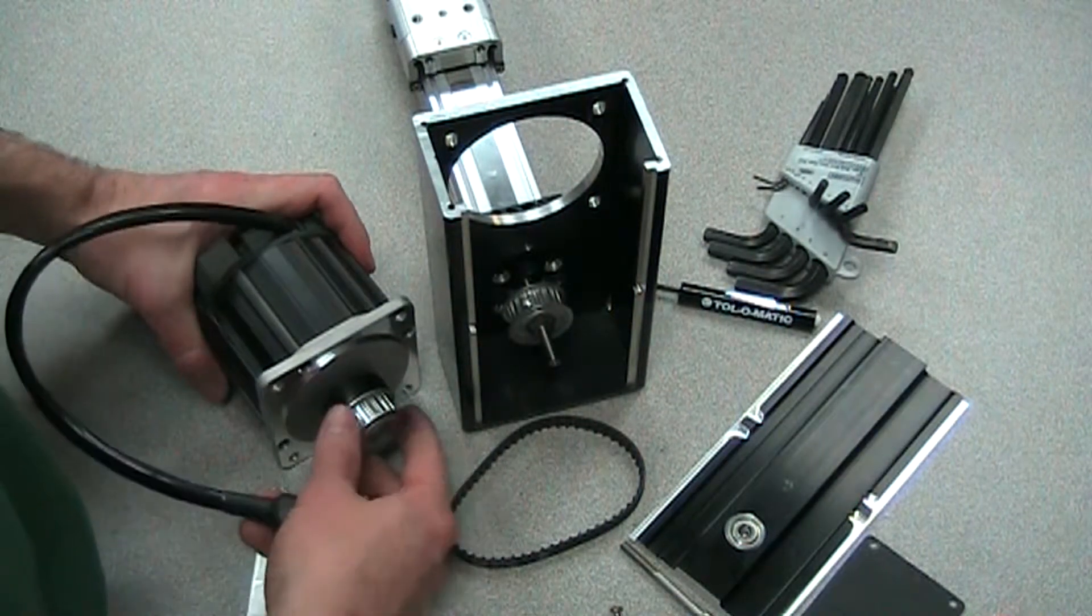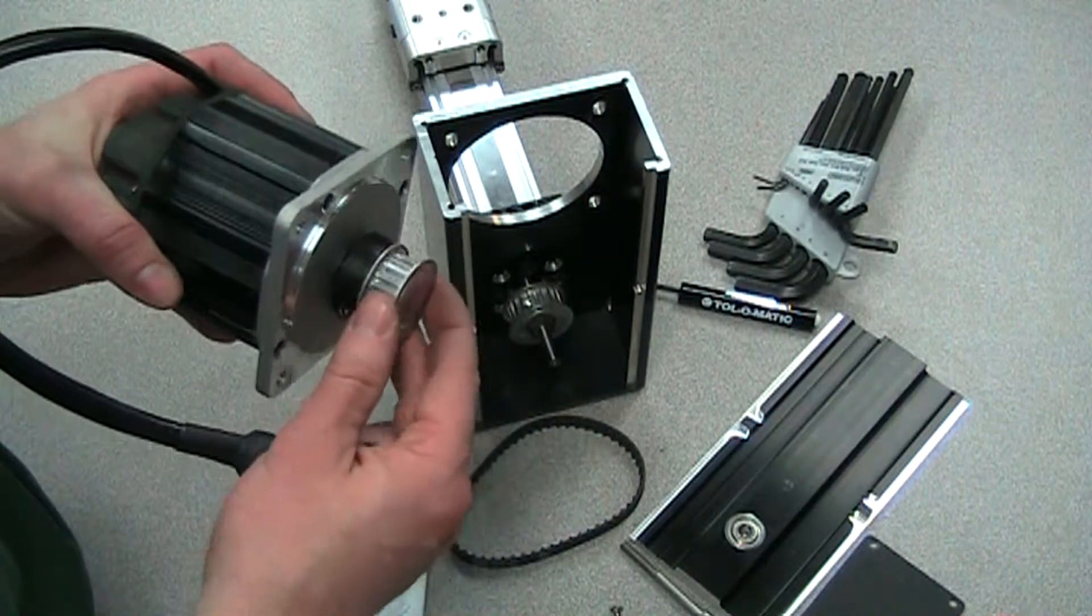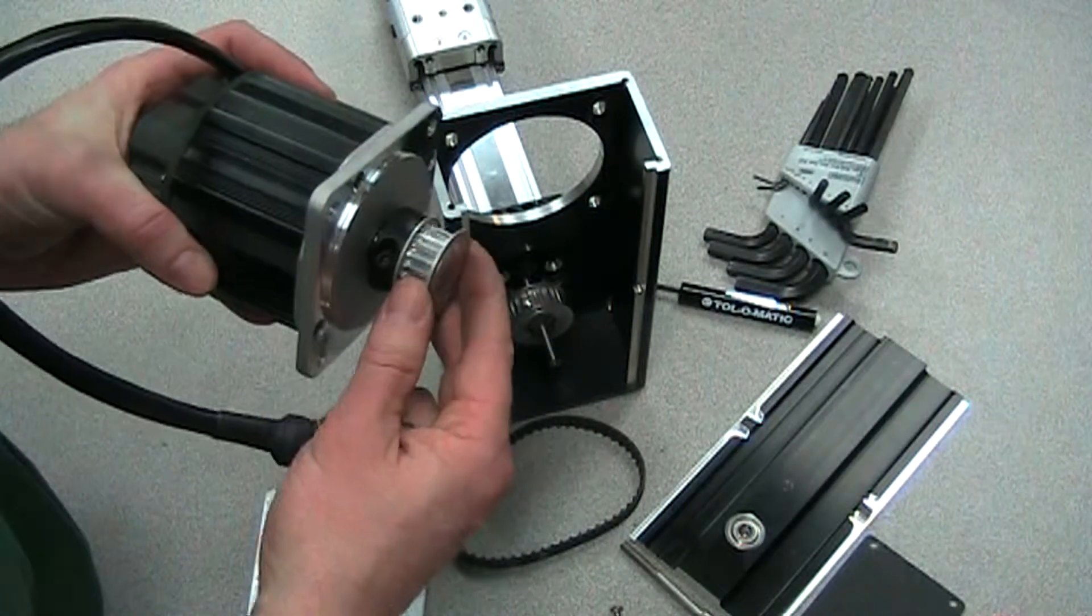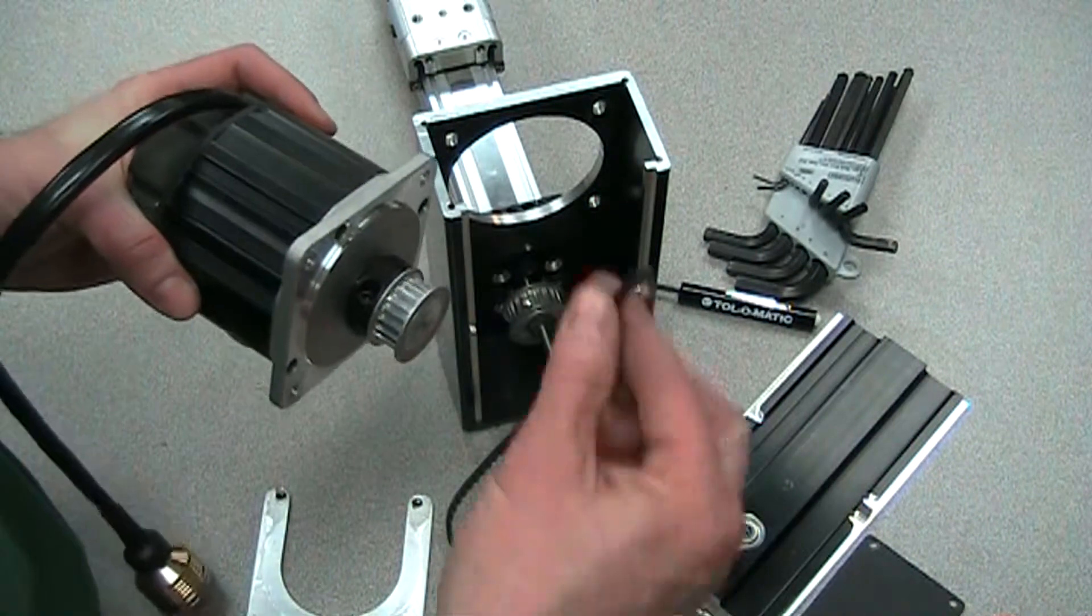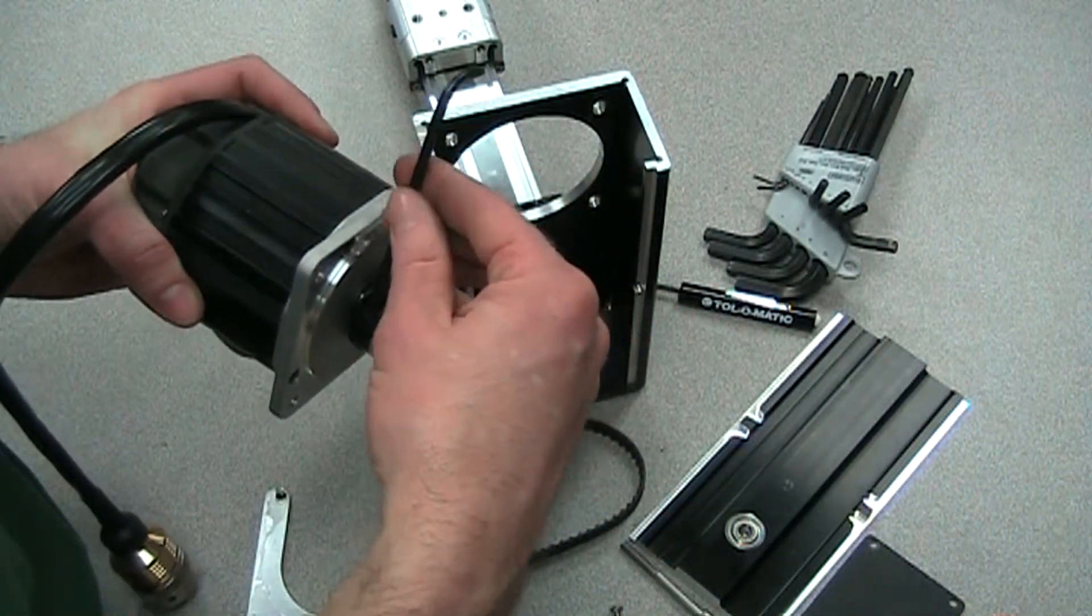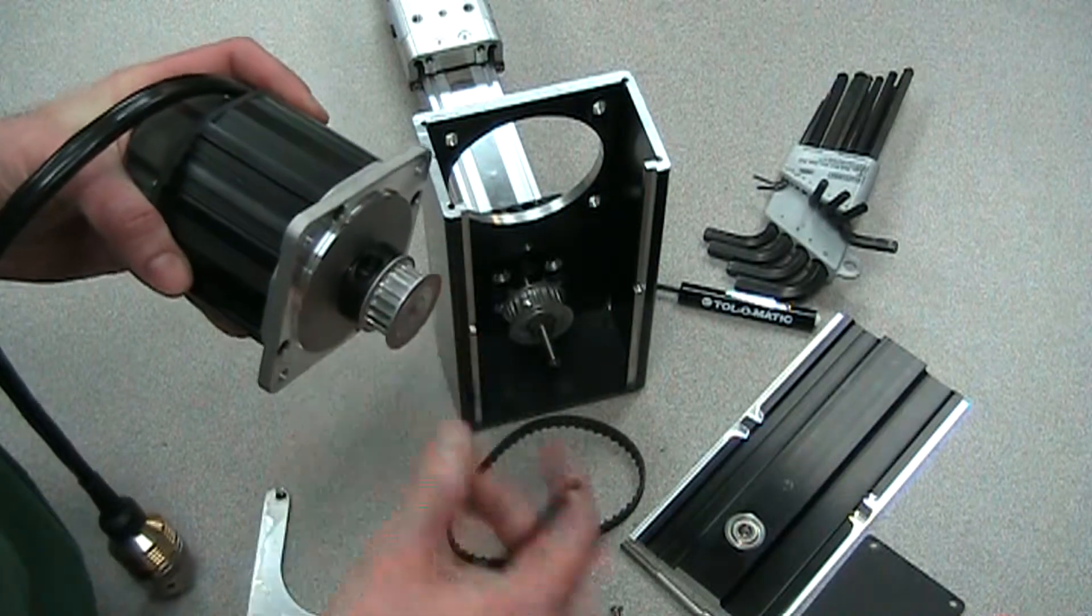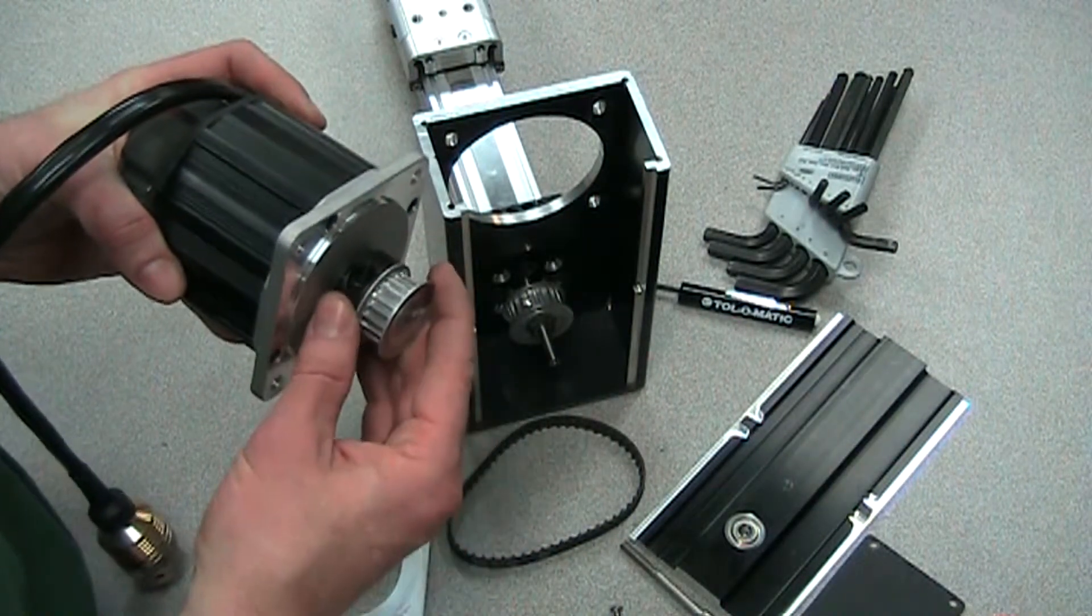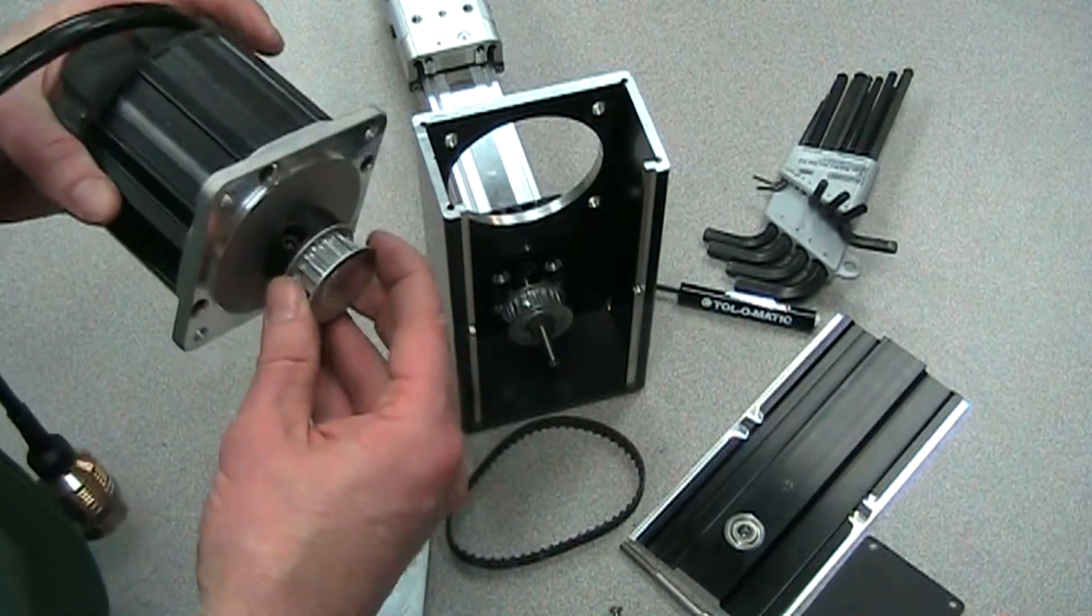First step would be to mount the pulley and the collar clamp onto the motor. You can see the collar clamp goes closer to the motor. You want to torque this screw, the cross bolt, to a required torque so that this pulley doesn't slip during operation.